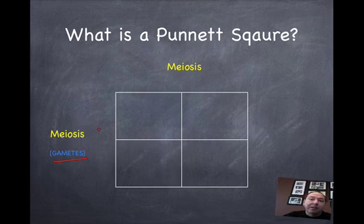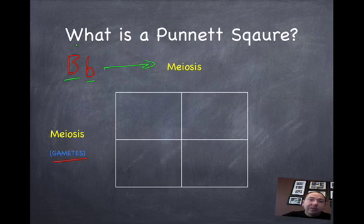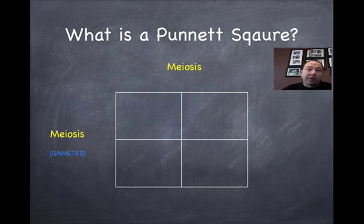Remember that we receive one trait from mom and one trait from dad. So let's say that we have a big B for brown eyes and a little b for blue eyes. If this is our genotype — the alleles or traits that we've inherited — we're going to get one from mom and one from dad. But during meiosis, these genes are going to be split apart, and we need to place those genes on the outside of this square, because that is where our gametes are going to go. On the inside of the square are the results of fertilization.